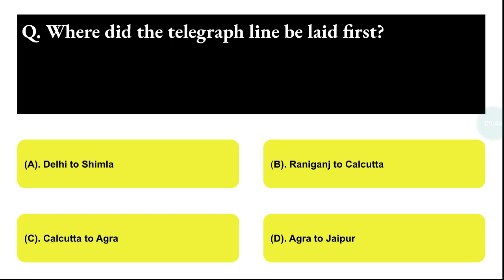Next question: where was the telegraph line laid first? Option A: Delhi to Shimla, Option B: Ranikhet to Calcutta, Option C: Calcutta to Agra, Option D: Agra to Jaipur. The correct answer is option C, that is Calcutta to Agra.